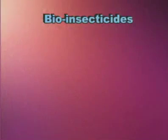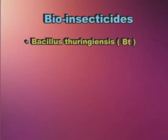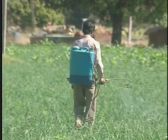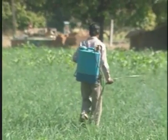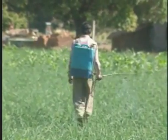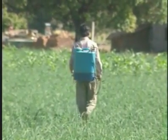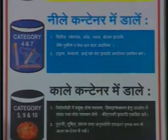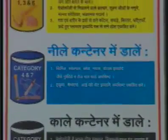By using bio-insecticides like Bacillus thuringiensis, neem and Trichoderma, which are eco-friendly and do not pollute soil. Methoxychlor can be used in place of DDT because it is biodegradable. General awareness through seminars and lectures can be spread in the public regarding disposal of waste.